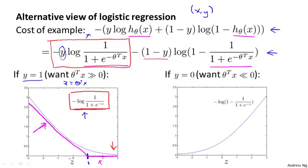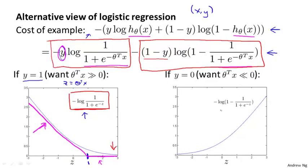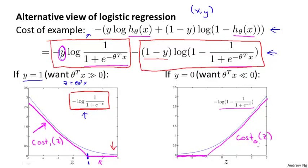We just talked about the case of y equals 1. The other case is y equals 0. In that case, only the second term of the cost applies, because the first term goes away when y equals 0. The cost contribution is given by plotting that term as a function of z. For the SVM, we again replace this curve with a new cost function: flat at 0 on the right, and growing as a straight line on the left. I'll call these two functions cost subscript 1 of z and cost subscript 0 of z, where the subscript refers to the cost when y equals 1 versus y equals 0.